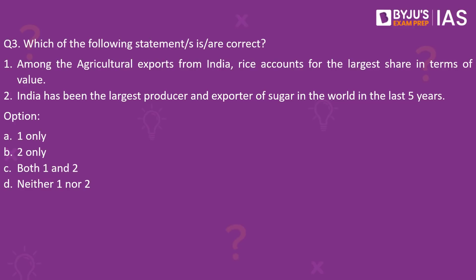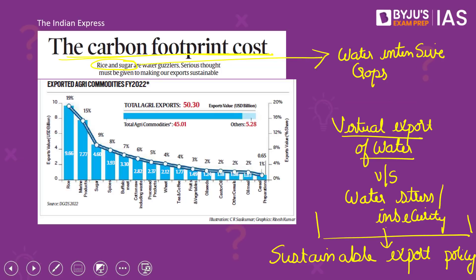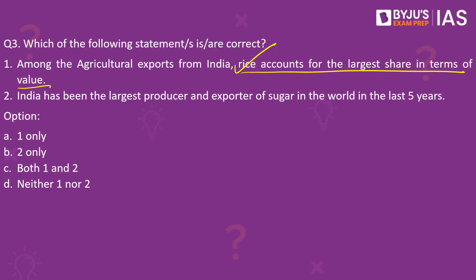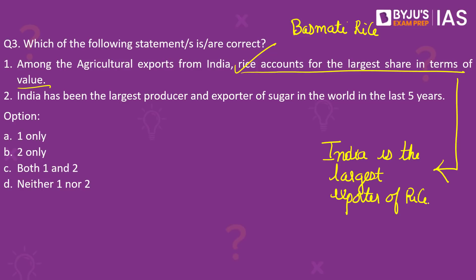Statement one says rice accounts for the largest share in terms of value — this is correct. Looking at the table of exported agri-commodities from India, it is very clear that rice accounts for the highest value. This impressive rice export in terms of value can be mainly attributed to the export of premium quality basmati rice, which has high global demand. India is also the largest exporter of rice — this was asked in a previous UPSC prelims question. Note the distinction: while India is the largest exporter of rice, it is not the largest producer. China is the largest producer of rice in the world, while India is the largest exporter.